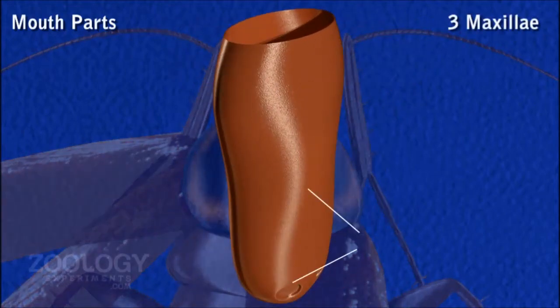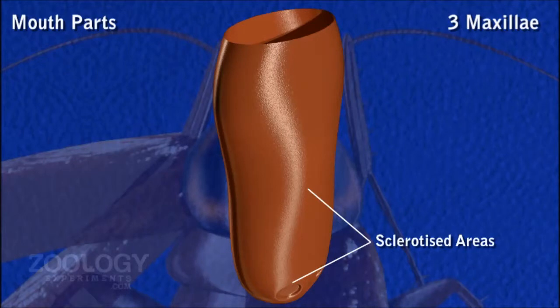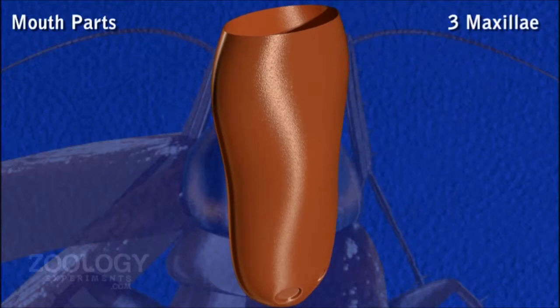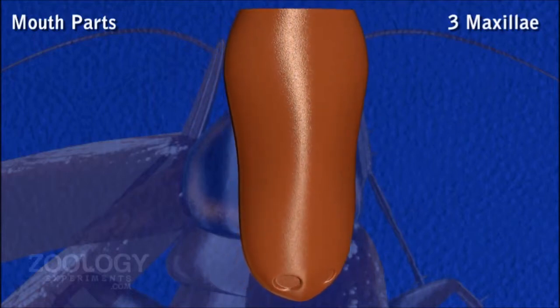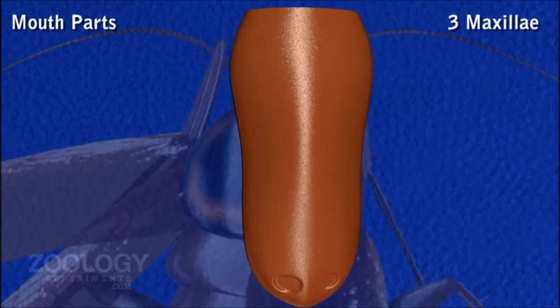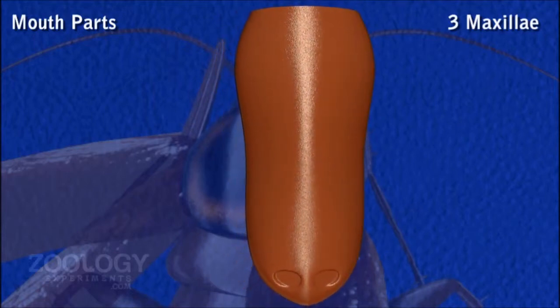Maxilla. The parts of the maxilla are: cardo, stipes, pulpifer, lacinia, lacinula, galea, denticles and maxillary palp.